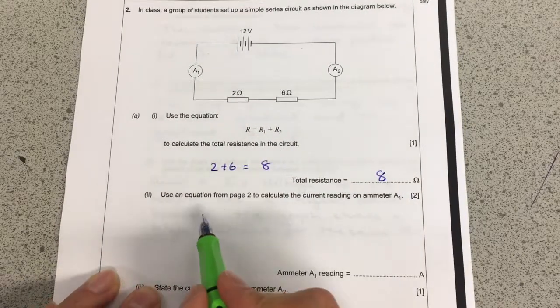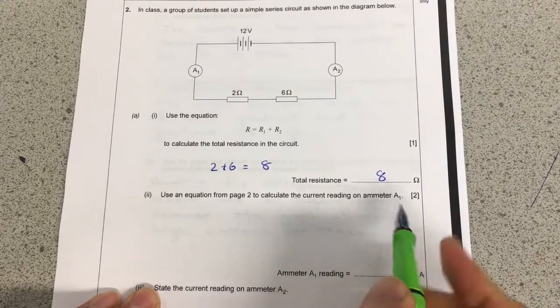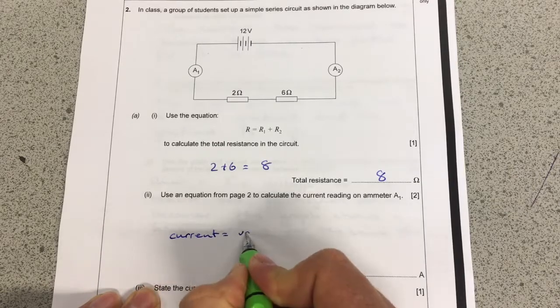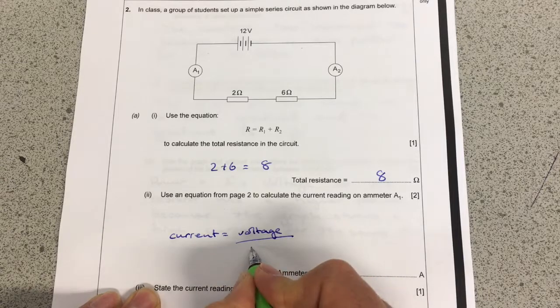And then, a little bit more complicatedly, use an equation from page 2 to calculate the current on the ammeter. So that's going to be current equals voltage divided by resistance.